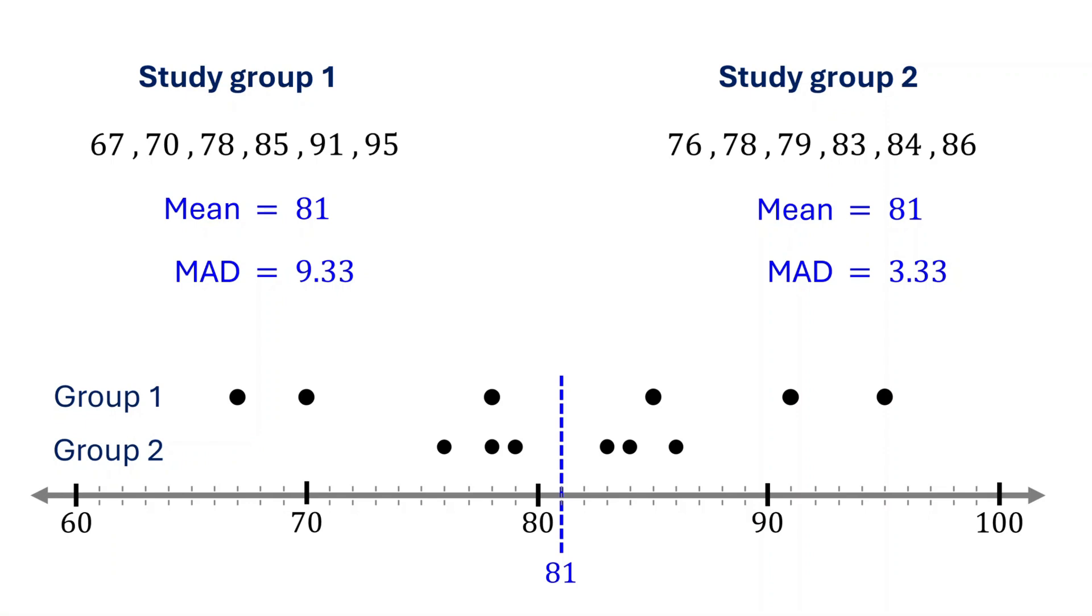You can see that the second group's test scores are clustered closely around the mean. On average, the data points are about 3.33 units away from 81.